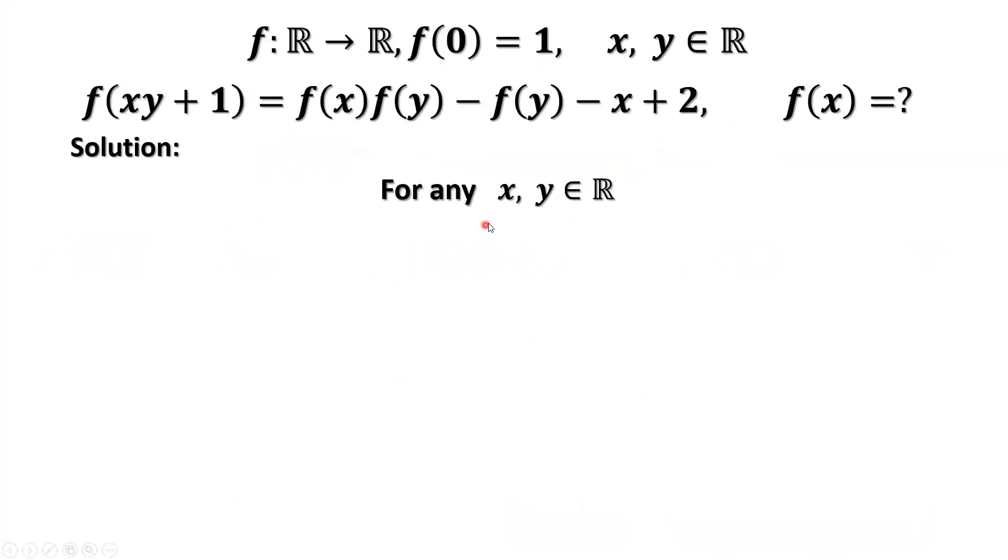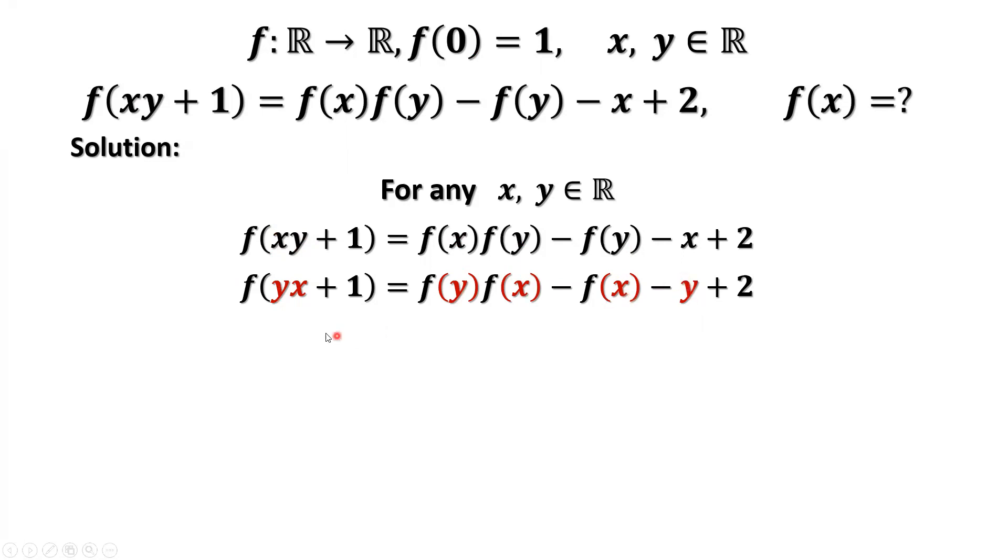For any given x and y are real numbers, we have this equation. We also have this result. If we switch the order of x and y, then we have here f(y), here f(x), here f(x), here f(x), here is y. Because x times y equals y times x.